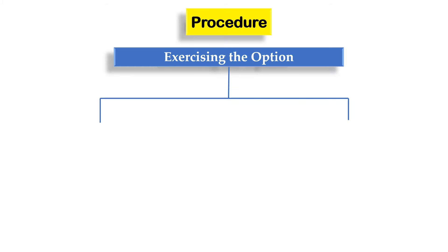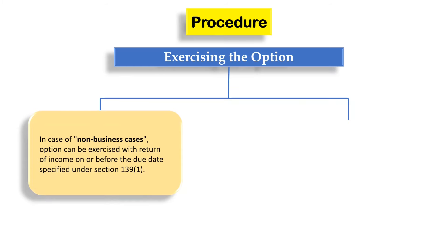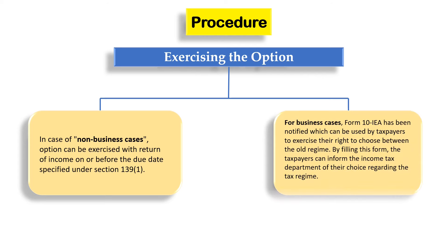Let us now see step by step how to opt out of the new tax regime. In case of non-business cases, the option to switch between the old tax regime or the new tax regime can be exercised with the return of income on or before the due date specified under Section 139(1). However, if you are reporting income under the head profits and gains of business and profession, Form 10-IEA has been notified.